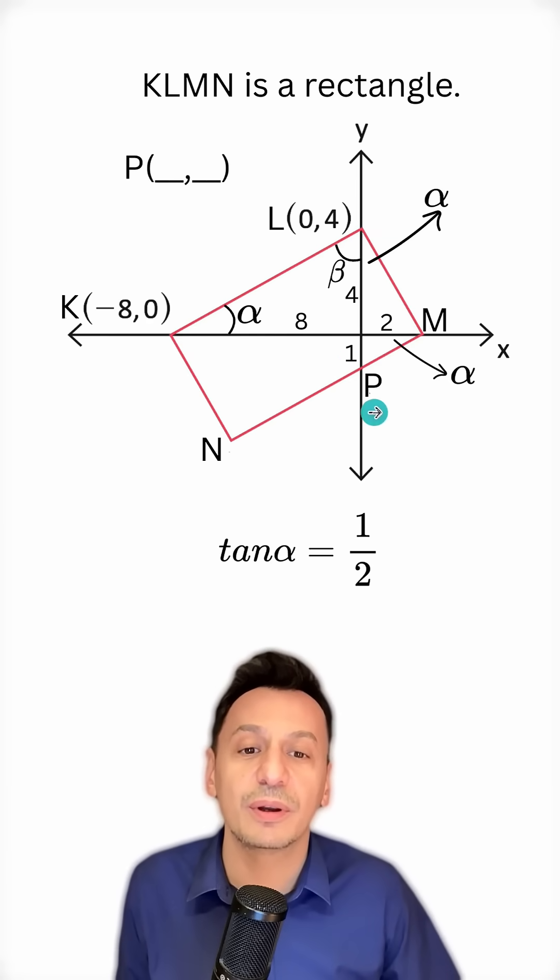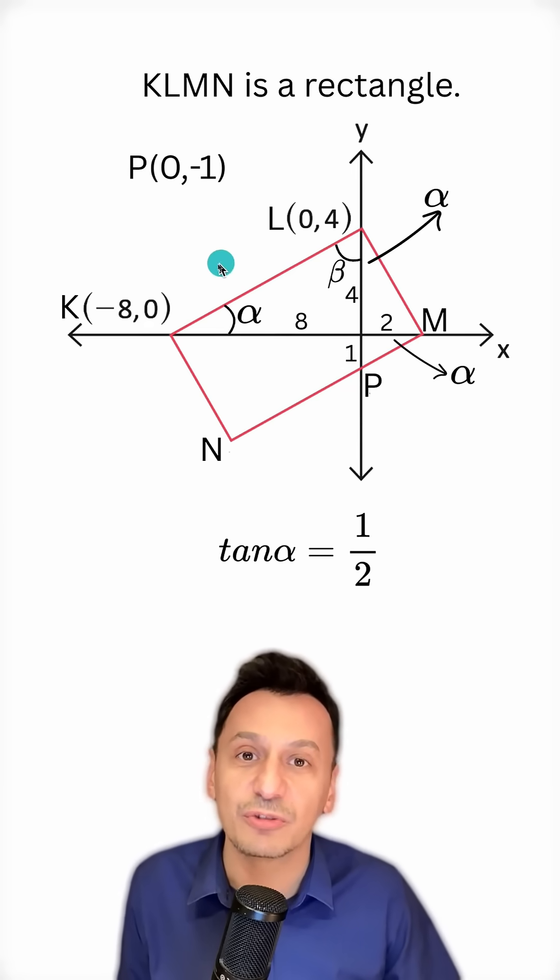Alright, now that we've written 1 here we can write the coordinates of P. Since it's on the y-axis its abscissa will be 0, and since the length here is 1, we can say its ordinate is minus 1.